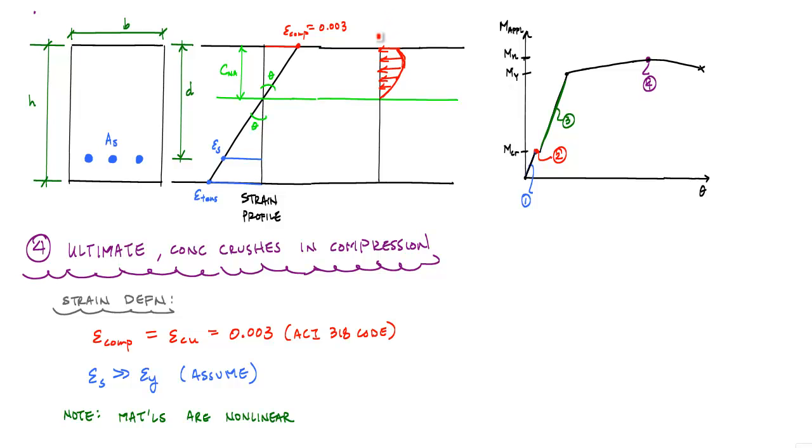This value, this distance over here is fc prime. And our steel, this fs, assuming that epsilon s is greater than epsilon y, then this fs, we're going to assume an elastic, perfectly plastic model, is equal to fy. We're going to have a force resultant here. The volume of this stress block would have a compression force resultant. That would be my equilibrium. And the moment associated with this, this m, is going to be our nominal moment, this mn value.